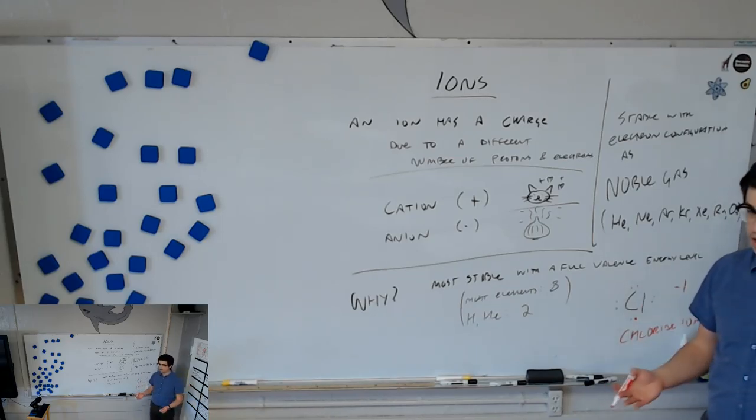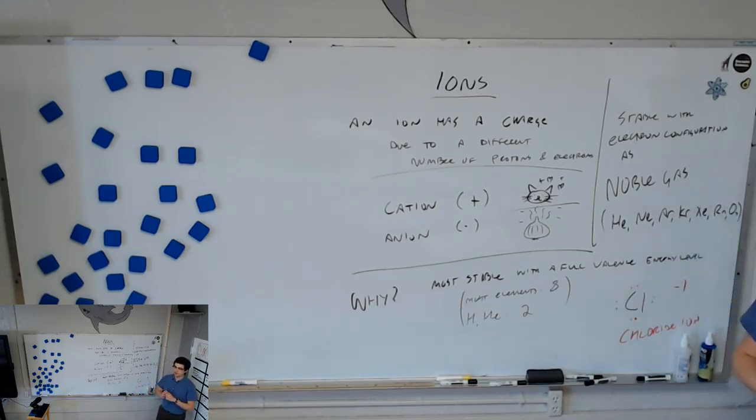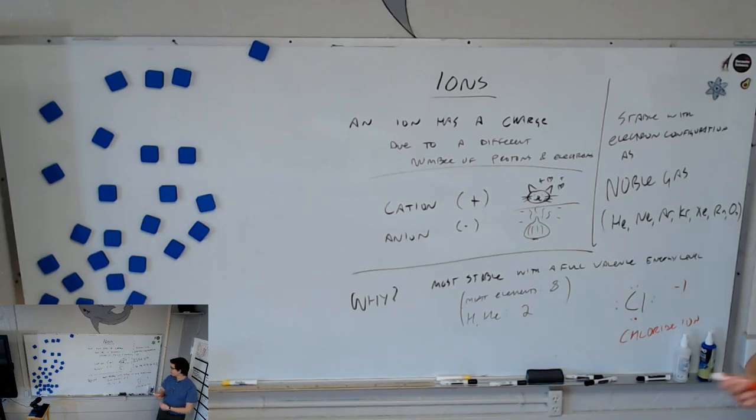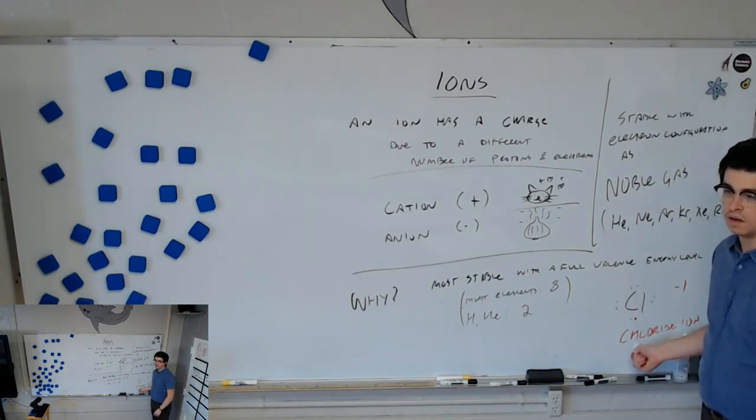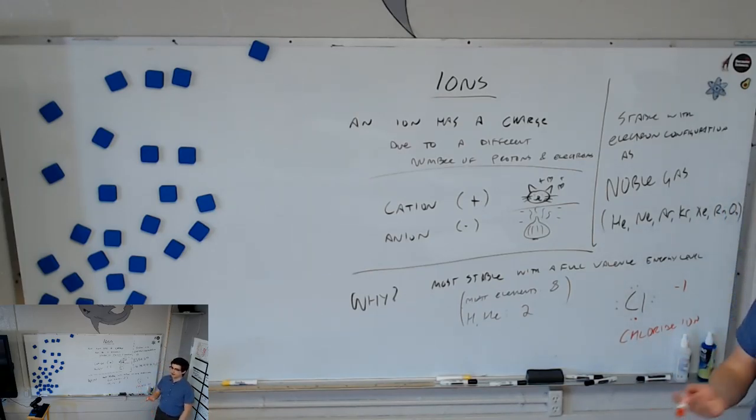And we call this the chloride ion. And it's the same for others. We have an oxide ion, and we have a fluoride ion. We change the name of anions to end in -ide. We don't change the name of cations. So, we have something like an iron ion or a sodium ion.